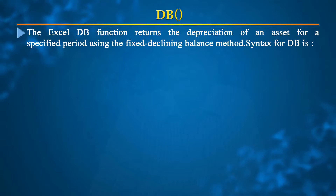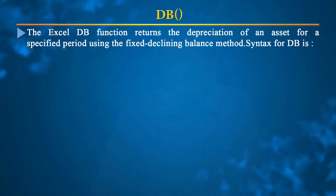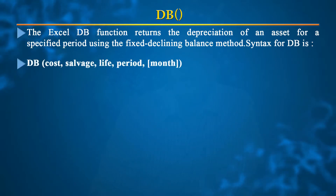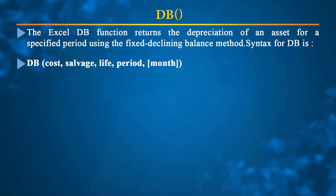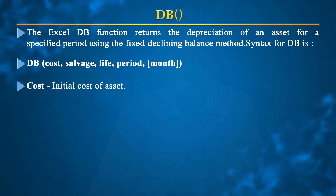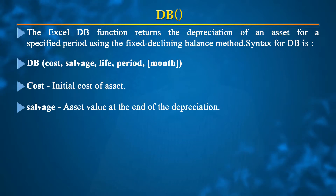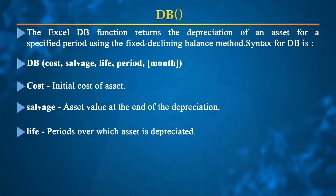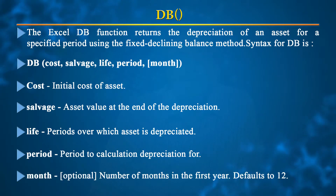Many times it is required to find the depreciation value — by what amount something will be depreciated — and if you know the salvage value, how depreciation will be handled. The DB function in MS Excel returns the depreciation of an asset for a specific period using the fixed declining balance method. Its syntax requires the arguments: cost (initial cost of the asset), salvage (asset value at end of depreciation), life (the period over which the asset is depreciated), period (the specific period for which to calculate depreciation), and an optional argument month.